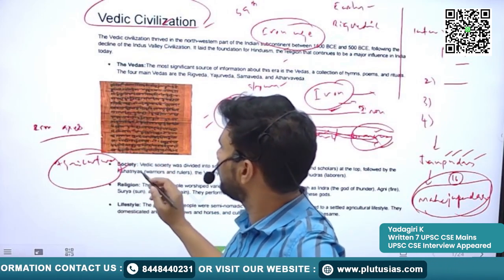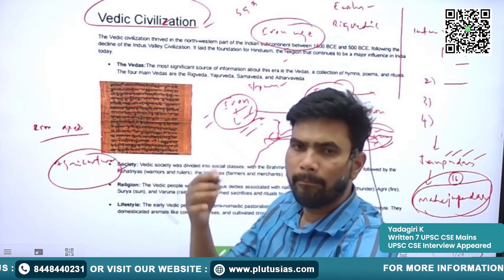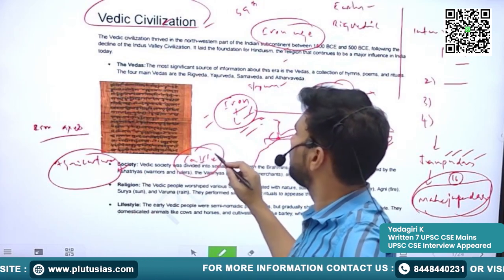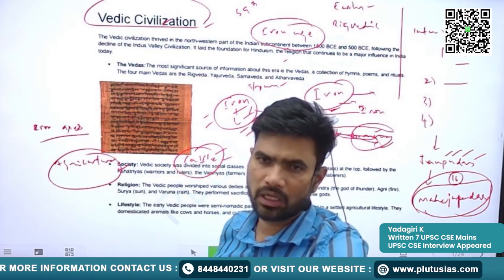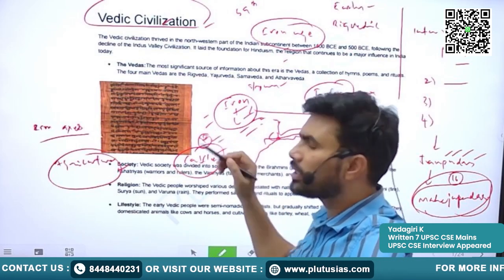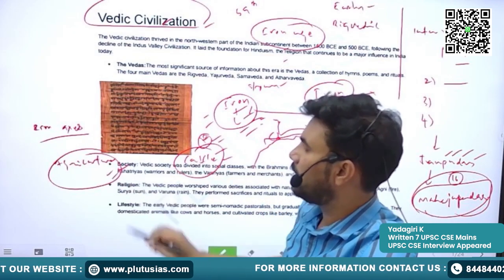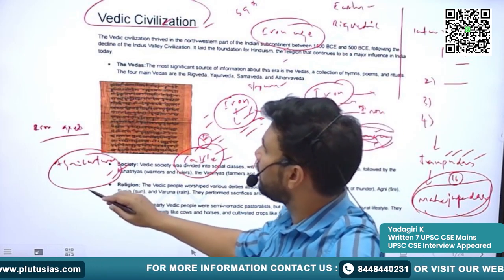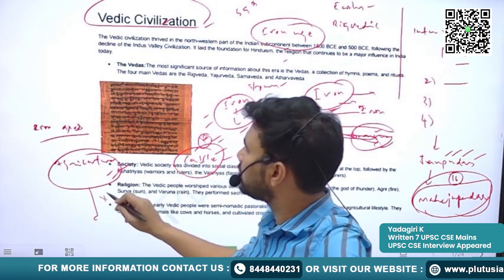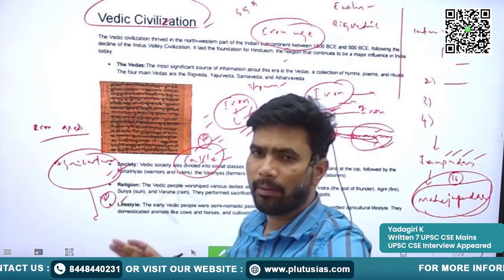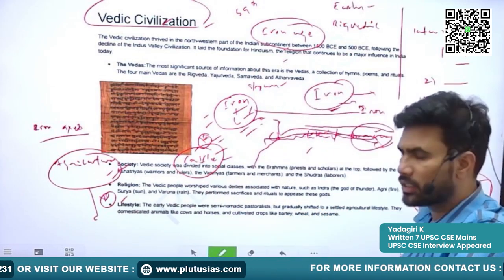In the earlier Vedic period, though agriculture was a secondary activity, the main occupation and subsistence was cattle. They were keeping hundreds of cattle for milk, transportation, etc. Cattle rearing was their major economic activity, apart from agriculture. By the end of the Later Vedic Period, we can say agriculture became the predominant activity of the Vedic civilization people.